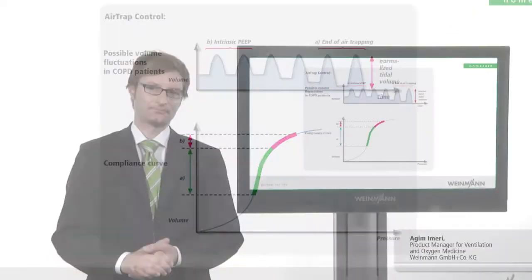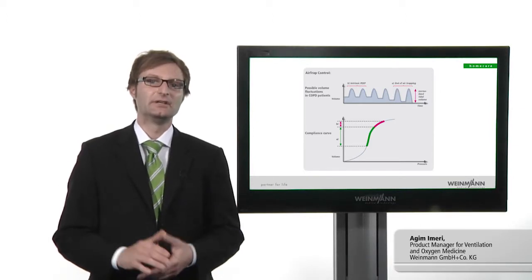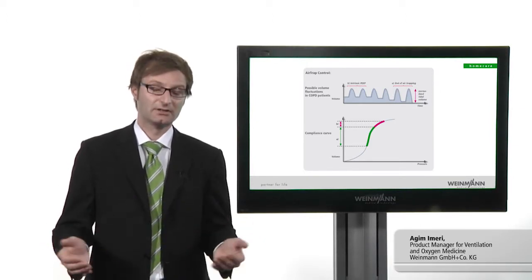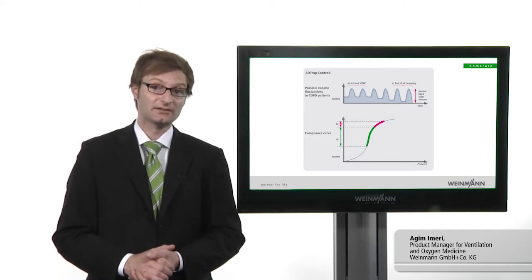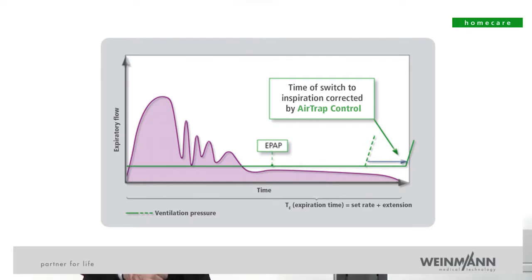How does air trap control work? Air trap control makes it possible to monitor expiration with regard to the likelihood of air trapping occurring and resulting in the development of intrinsic PEEP, then allows the treatment to be adapted to the patient's needs.